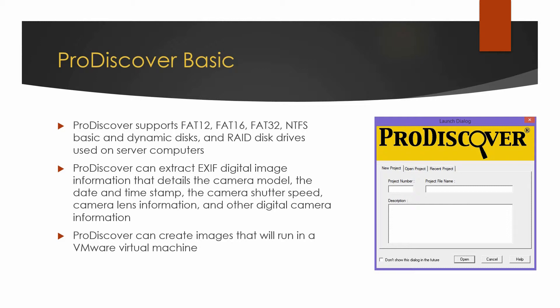Furthermore, ProDiscover can extract EXIF digital image information that details the camera model, the date and time stamp, the camera shutter speed, camera lens information, and other digital camera information. This information can be useful in identifying the camera that took a particular picture.